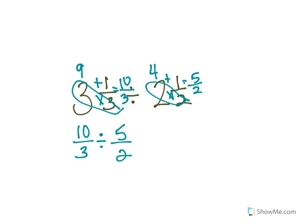So I now need to keep this the same. This turns into multiply, and then I'll take the reciprocal of this. So that becomes ten-thirds.